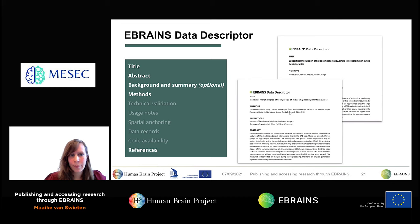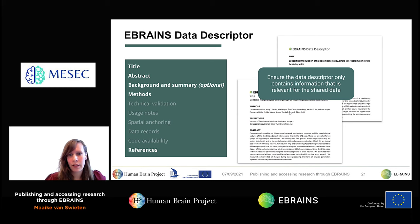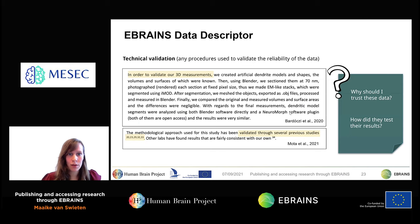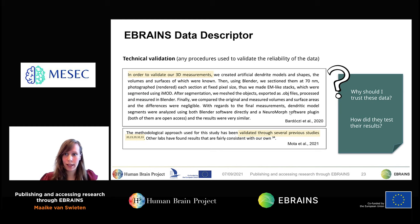It's important that the data descriptor focuses only on the relevant shared data, not all other types. Sections that are less self-explanatory include technical validation, user notes, spatial anchoring, data records, and code availability. The technical validation section asks researchers to provide any procedures done to validate your data — such as control experiments, references to standardized protocols, or previous studies — answering questions like 'why should I trust these data' and 'what did the authors do to test validity.'